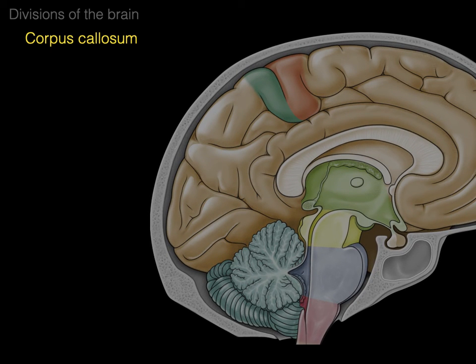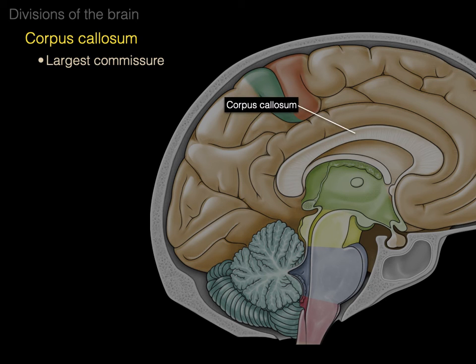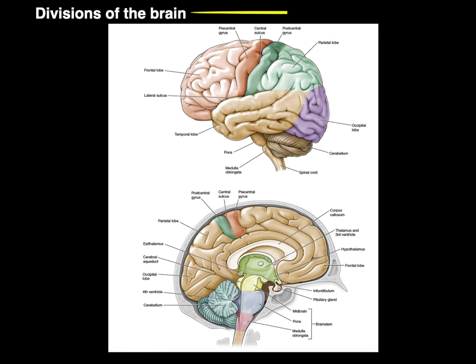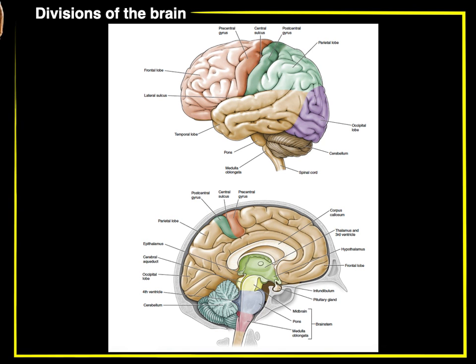The corpus callosum is the largest commissure — a commissure being a collection of axons that course from one side of the central nervous system to the other. The corpus callosum contains millions of neurons. In this anterior view, with the cerebral hemispheres separated, we can see the corpus callosum at the floor of the longitudinal cerebral fissure. And that is an overview of the divisions of the brain in a nutshell.